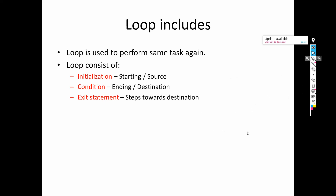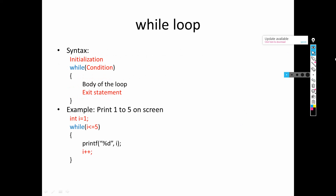Now we come to the while loop. First, let's understand the syntax. The three things we discussed are to be arranged in the syntax of while loop. First there is initialization — the starting of the loop. Then we write the while statement; 'while' is the keyword, and inside round brackets we specify the condition. The condition specifies the destination.